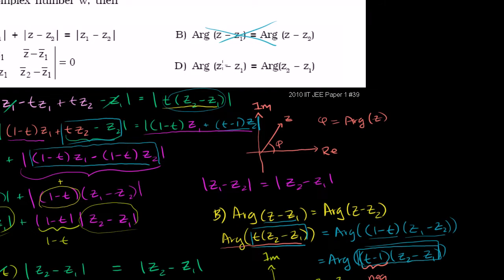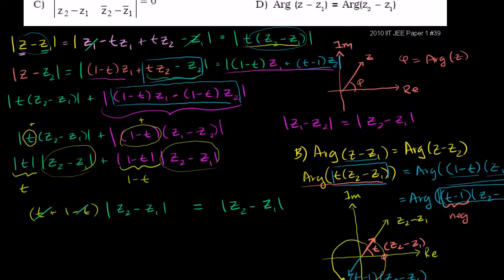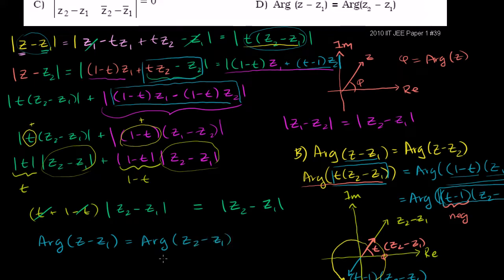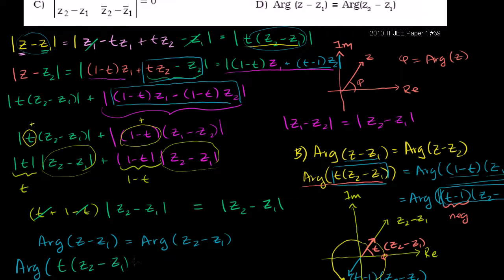Now let's tackle choice D, since it looks very similar. Choice D tells us that the argument of z minus z1 is equal to the argument of z2 minus z1. We already know z minus z1 equals t times (z2 minus z1), so the statement becomes: is the argument of t times (z2 minus z1) equal to the argument of (z2 minus z1)?